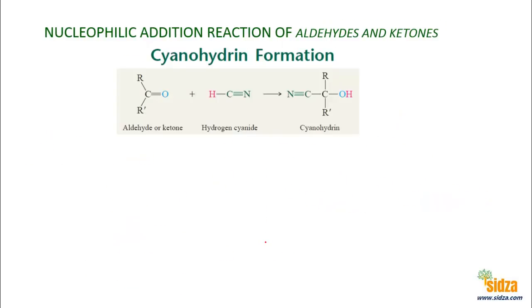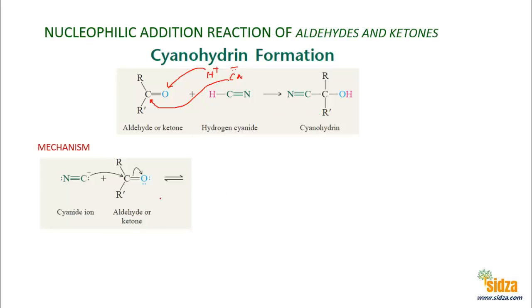Let's take the example of cyanohydrin formation. Cyanohydrin formation from aldehydes and ketones is a nucleophilic addition reaction where hydrogen cyanide is added to the aldehyde or ketone. Here, H⁺ is the electrophile and CN⁻ is the nucleophile. The cyanide ion attacks on the carbon, and the electron pair shifts to the oxygen. In the first step, you get the four groups attached to carbon with a negatively charged oxygen, a CN group, and R groups. In the second step, H⁺ attacks the oxygen to give the cyanohydrin product.